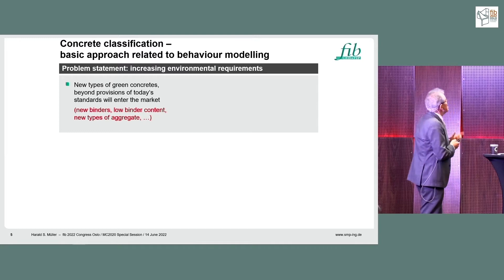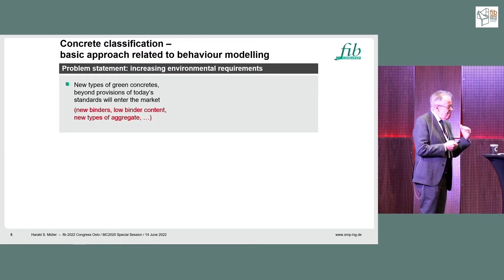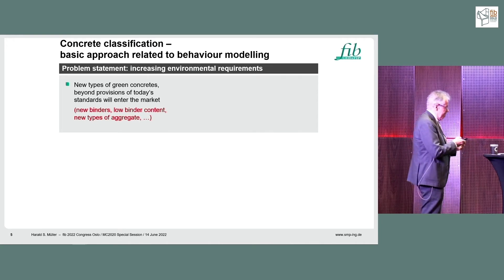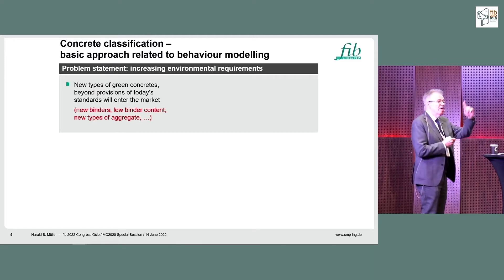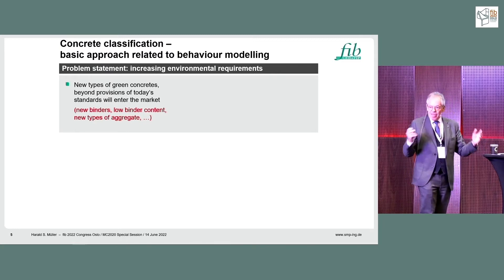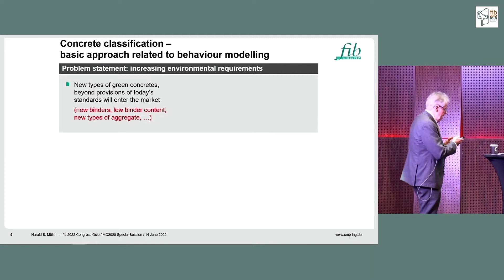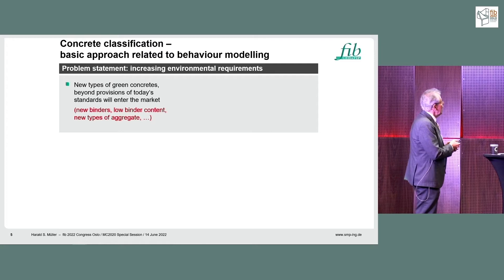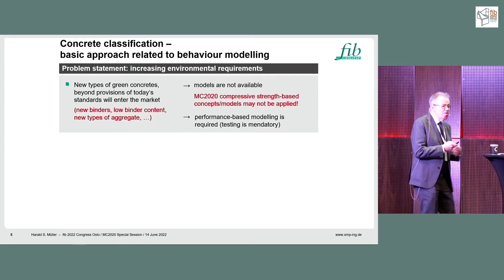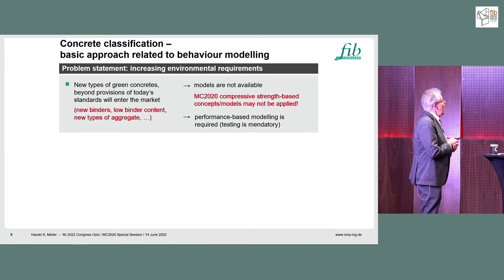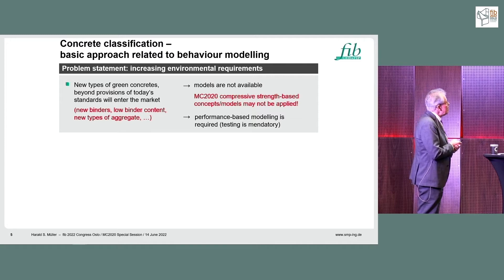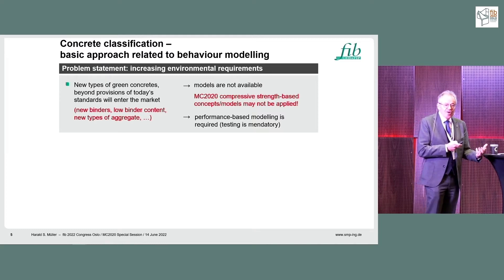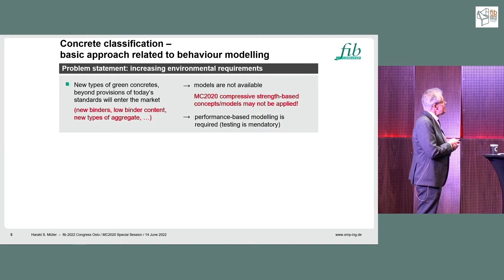A major problem from the beginning was that we are creating a code at a time when concrete composition is completely changing. We have new types of concrete — nearly every second presentation at this conference gives insight into how concrete composition is changing to achieve more sustainability. This means new binders, low binder content, new types of aggregates, and so on. The consequence is we don't have models for this; we have no consolidated knowledge on these new types of concrete, and we cannot apply the well-established strength-based concepts of the past 50 years. They cannot be applied to new types of concrete. We need performance-based testing and modeling, and this is prescribed in the Model Code.